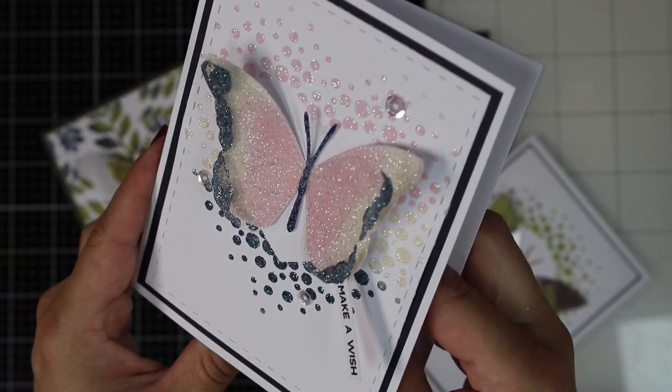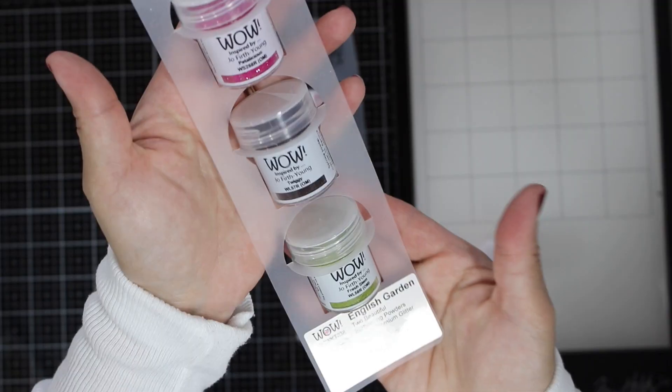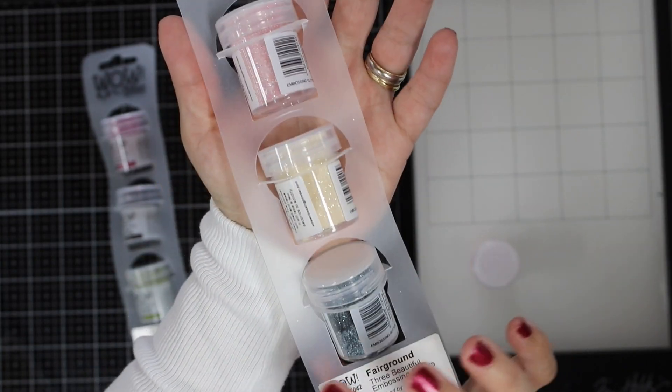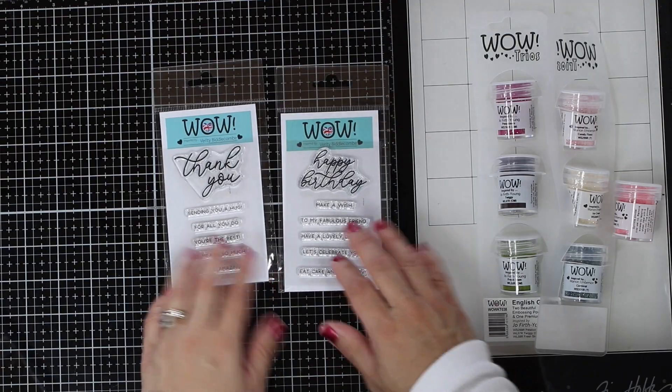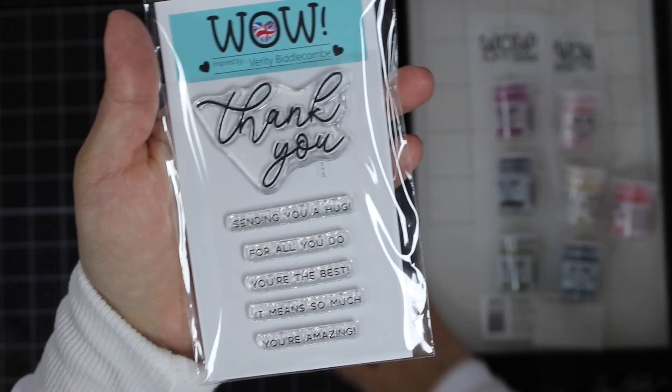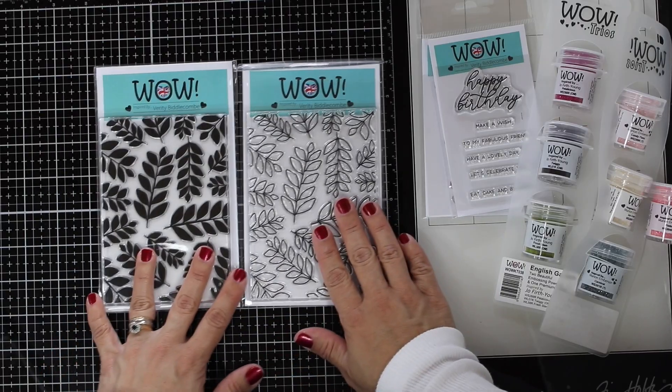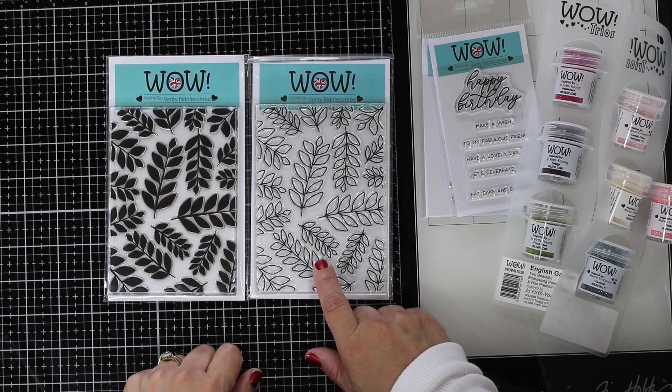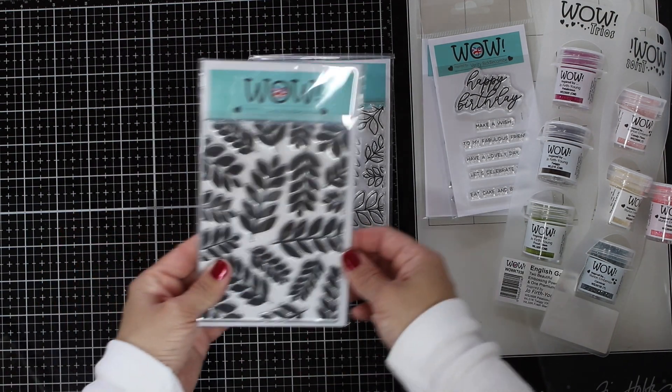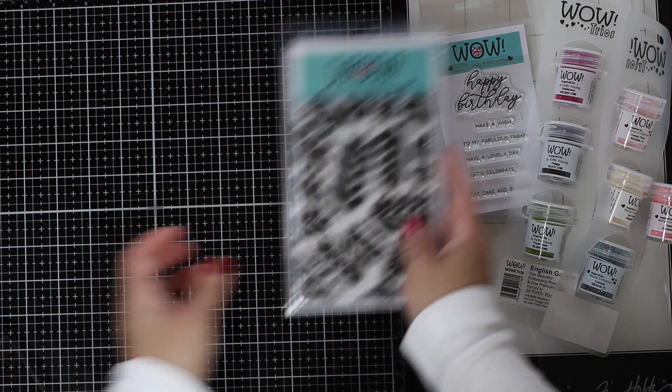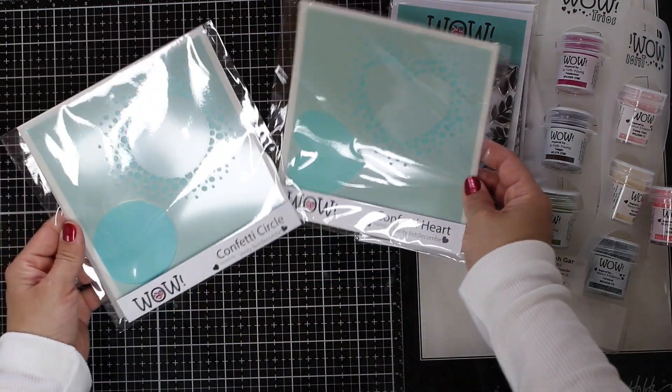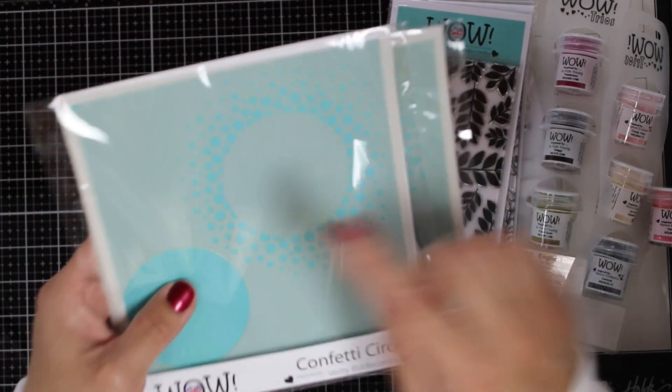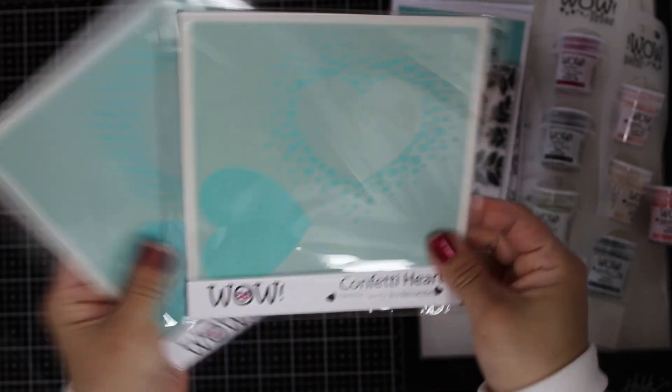Let's start by showing you the new embossing powders. There are two new trios: this one here is called English Garden, and this one here is called Fairground. You will be able to see the colors of these embossing powders across this video and also in the pictures in my blog. WOW is also releasing clear stamps - I have here thank you and birthday sentiments - and they are also offering background stamps. One is the outline of the image and the other one is the bold image. This will allow you to stamp the bold image with ink, for example, and the outline with embossing powder, which will be very nice. They are also releasing stencils, so they have this confetti circle and also confetti heart. What is cool about these products is that they have been designed to have fun using embossing powders.